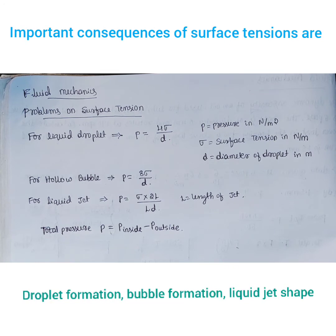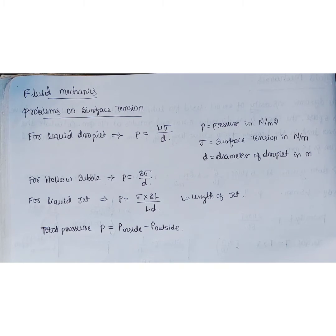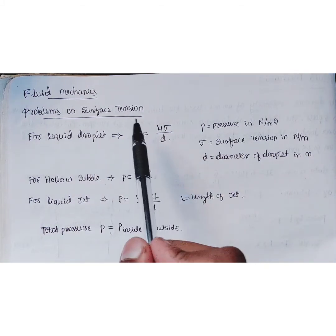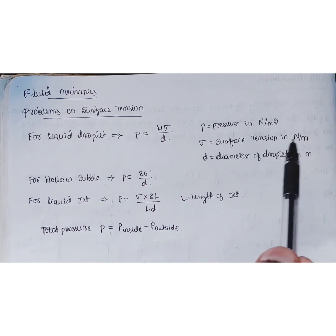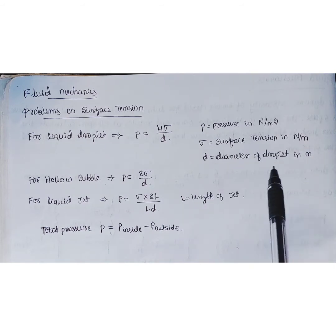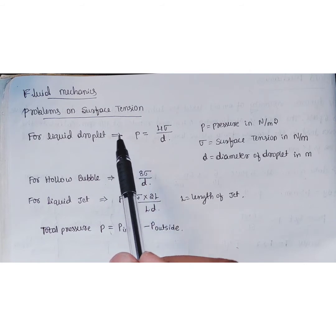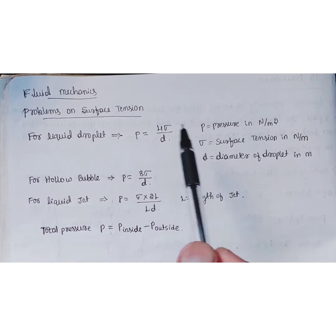For each consequence, we have different types of pressure equations. The pressure exerted will be different for all three cases. By considering the surface tension effect, we derive what pressure is acting in that liquid. For a liquid droplet, the formula is p = 4σ/d, where p is pressure in Newton per meter square, σ is surface tension in Newton per meter, and d is the diameter of the droplet in meters.